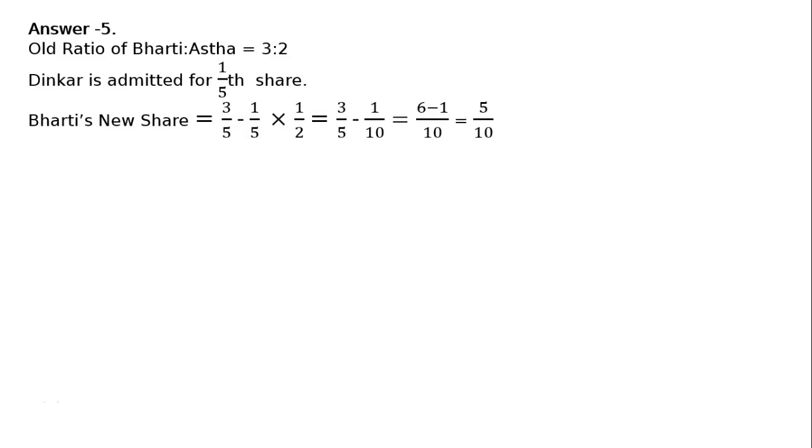Dinkar was admitted for 1/5th share, which he is taking equally from Bharti and Astha. That means 1/5th multiplied by half from Bharti and half from Astha. Old ratio of Bharti to Astha is equal to 3 is to 2. Dinkar is admitted for 1/5th share. Bharti's new share: old share was 3 upon 5 minus 1/5th half was taken from Bharti and 1/5th half was taken from Astha, equally taken from both in 1 is to 1 ratio. Hence, 1 upon 5 multiplied by half, that is equal to 3 upon 5 minus 1 upon 10. That is equal to LCM 10, 3 to 6 minus 1, that is 5 upon 10.